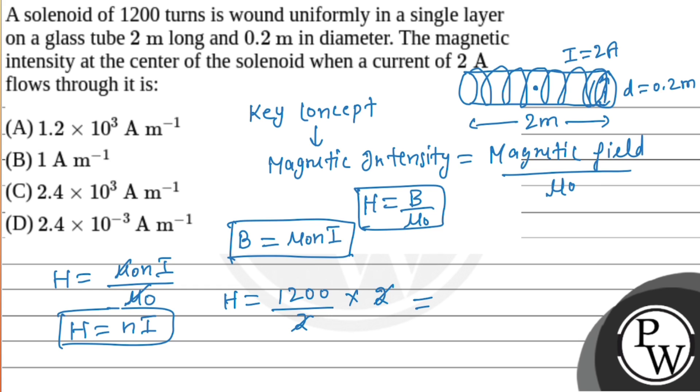What we get is 1200 amperes per meter as an answer, or we can write it as 1.2 × 10³ amperes per meter. This is our final answer, option number one. I hope you guys understood the concept very well. Thank you so much.